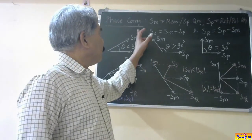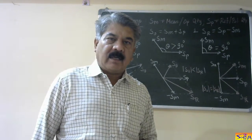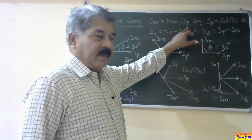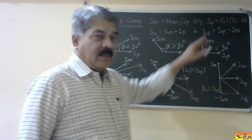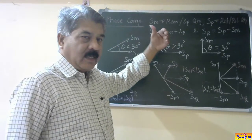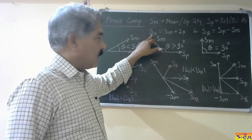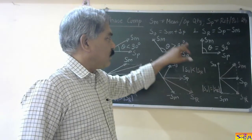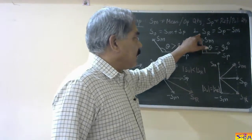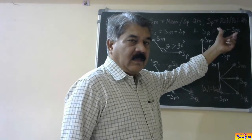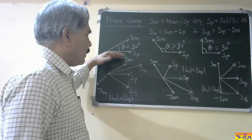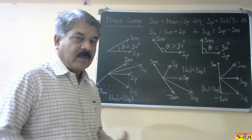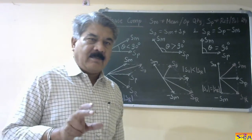Now I will consider the inherent phase comparator. SM is the measured or operating quantity for the phase comparator. SP is the polarizing or reference quantity. These quantities are changed to their sum and difference: SO, the operating quantity for the amplitude comparator, is obtained by SM plus SP, and SR, the reference quantity for the amplitude comparator, is obtained by SP minus SM. For simplicity, the amplitude of both quantities is considered the same in all three conditions.